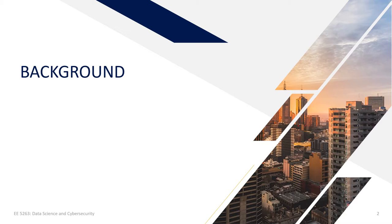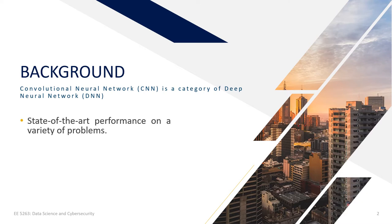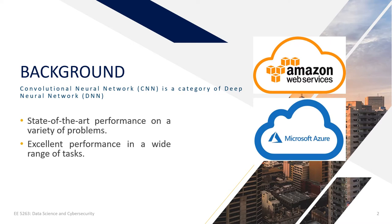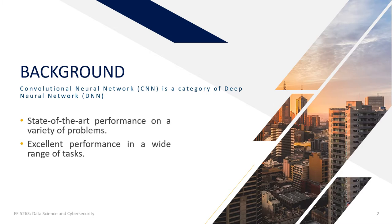Convolutional neural networks are a category of deep neural networks that have recently been achieving state-of-the-art performance on a variety of problems, such as visual classification and recognition, object detection, and others. Given their excellent performance in a wide range of tasks, many large companies — for example, Amazon AWS, Microsoft Azure, Google Cloud, BigML — offer cloud-based services that allow customers to access their deep learning models as APIs.